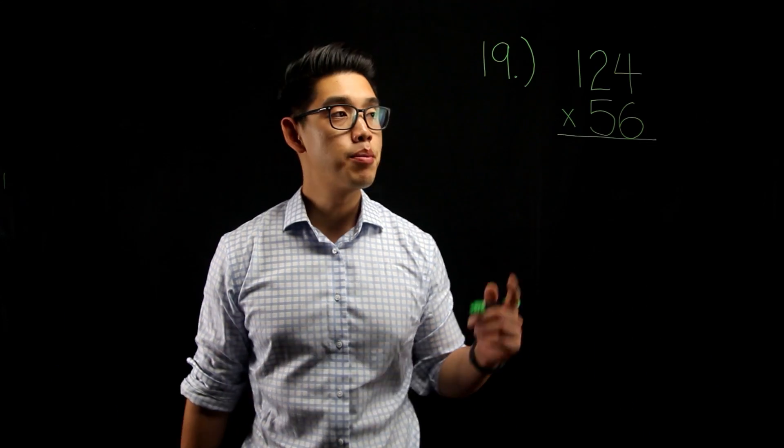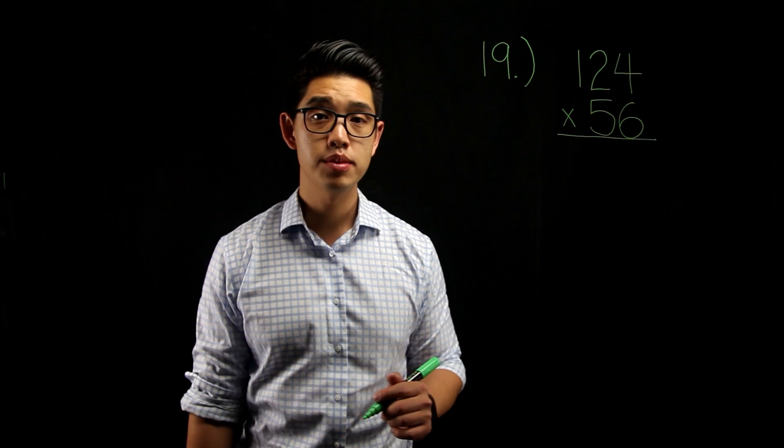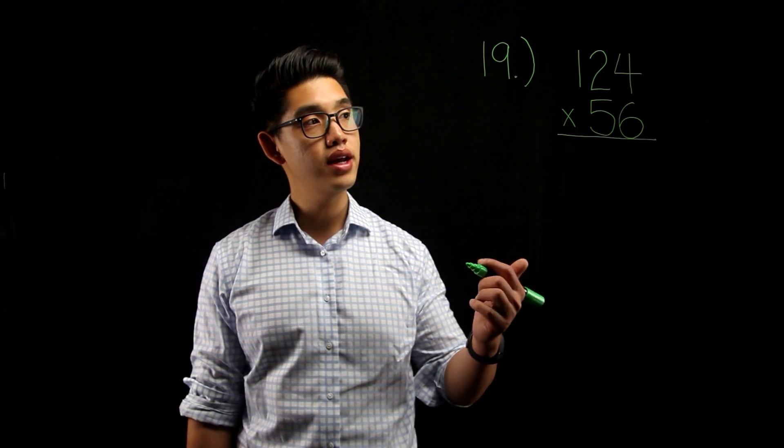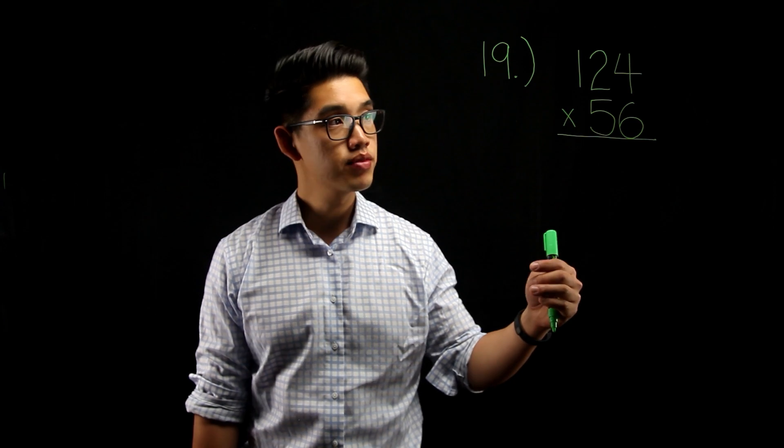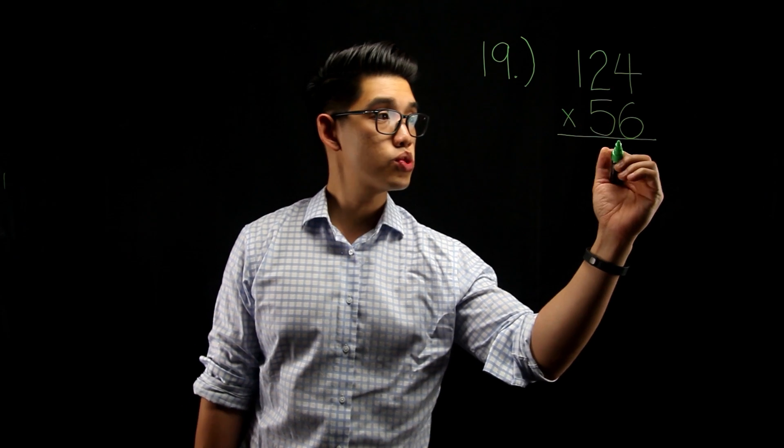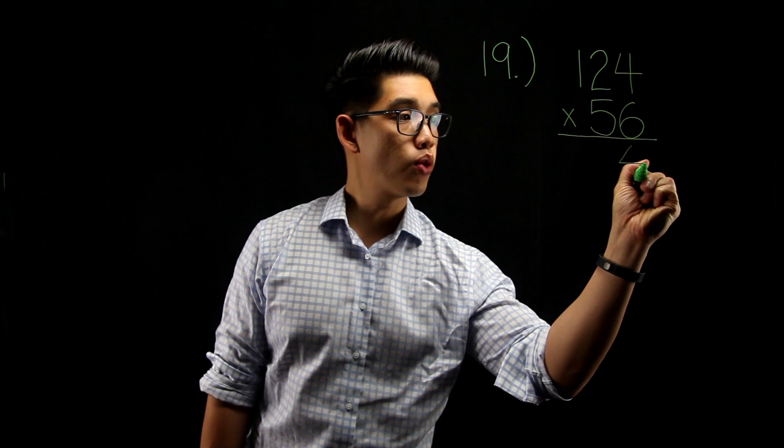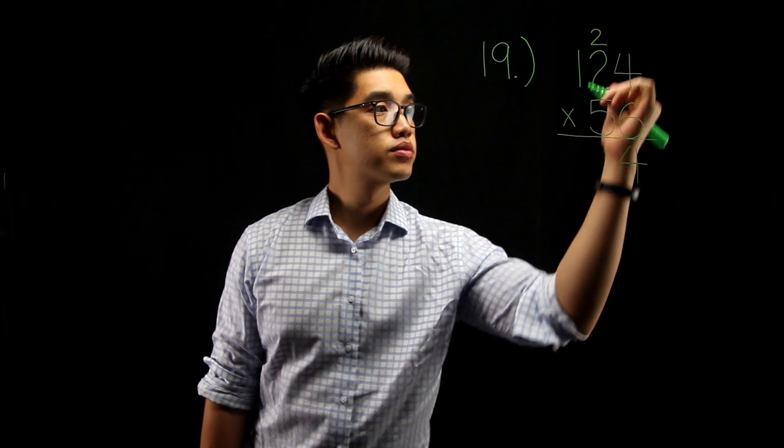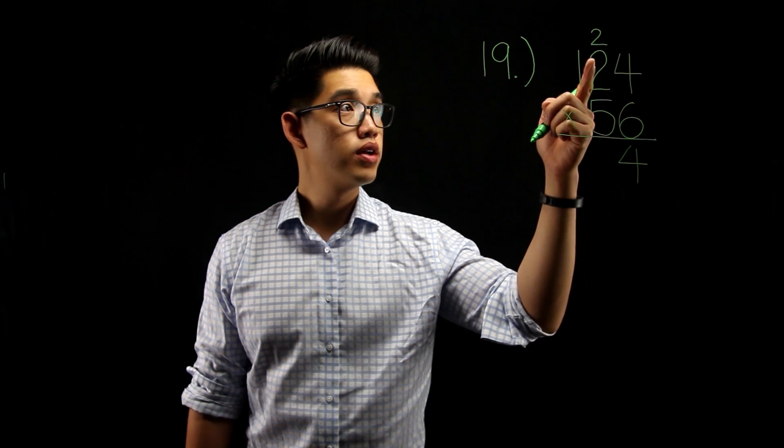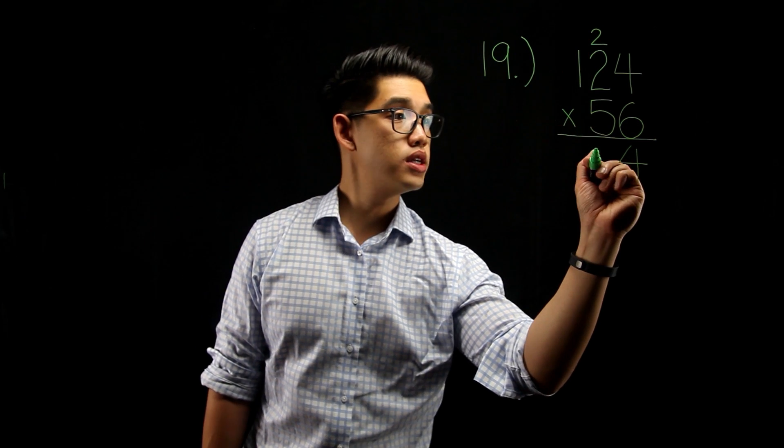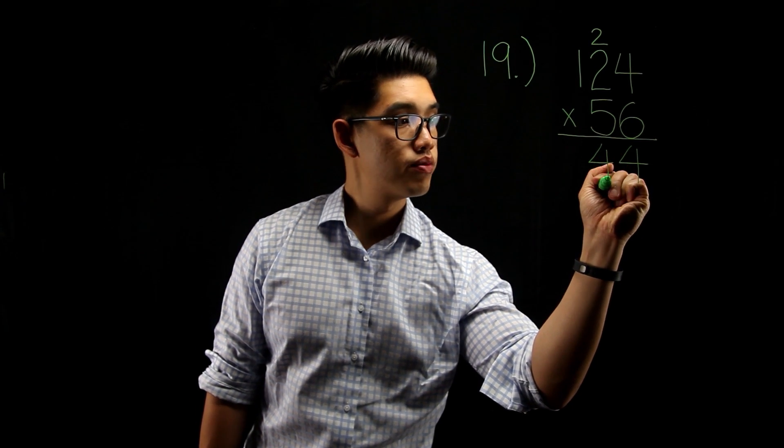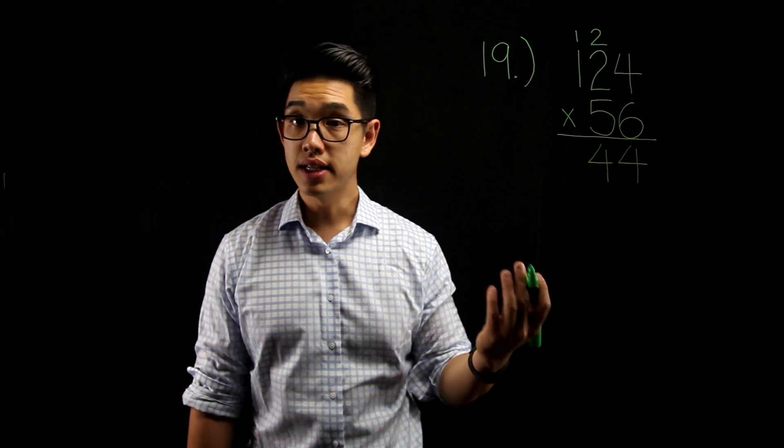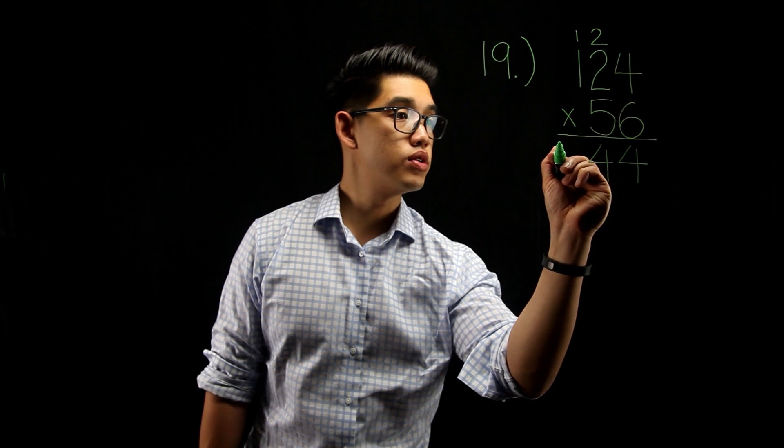Number 19 is a multiplication question. It's 124 times 56. Whenever I have a multiplication question, I like to write it from top to bottom. The first thing you're going to do is you're going to multiply 6 times 4, which is 24. You're going to write the 4 here and write the 2 on top. Then, you're going to multiply 6 times 2. That's 12 plus another 2, that's going to be 14. Write the 4 here, place the 1 on top here. And then, you're going to do the last one. 6 times 1, that's 6 plus another 1, that's going to give you 7.